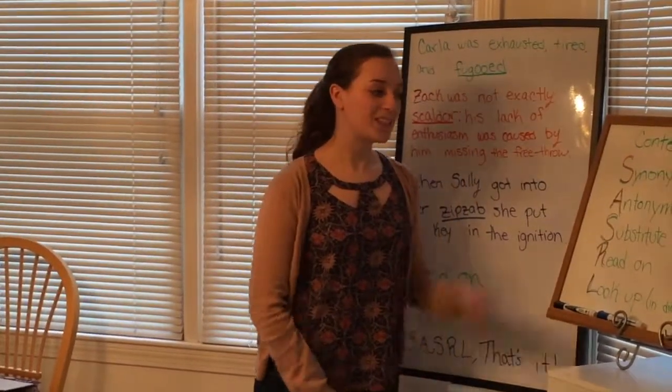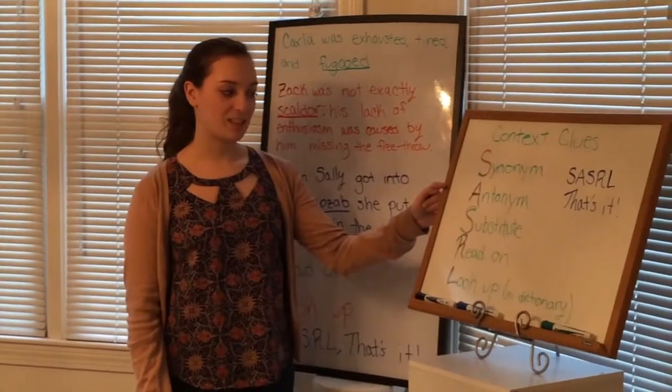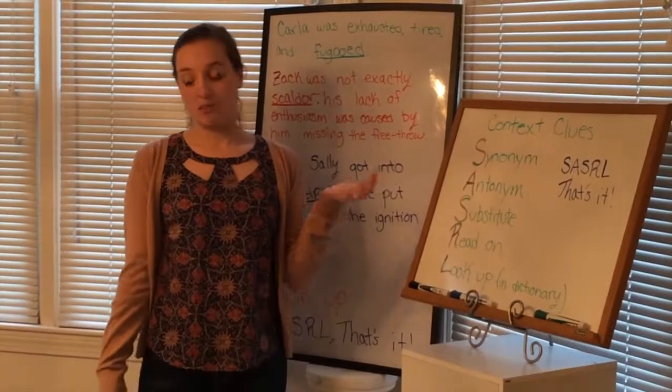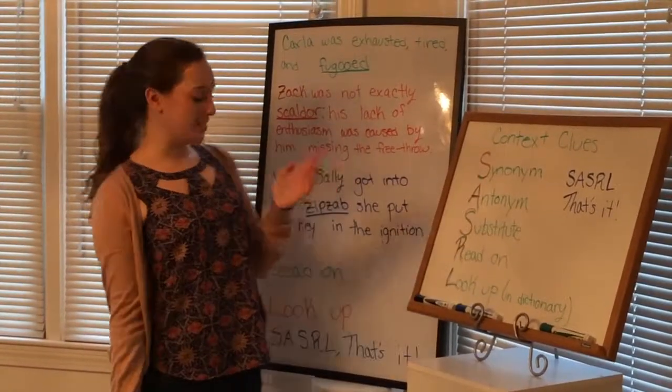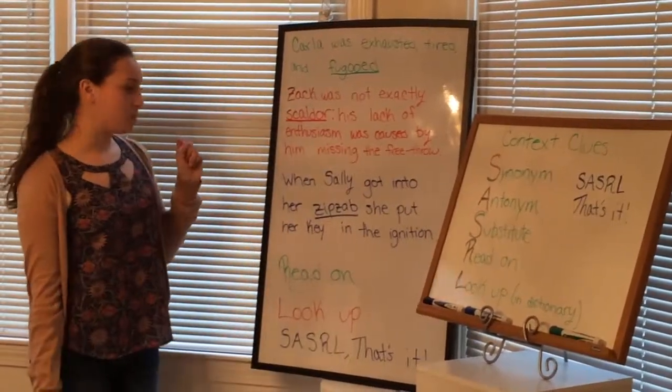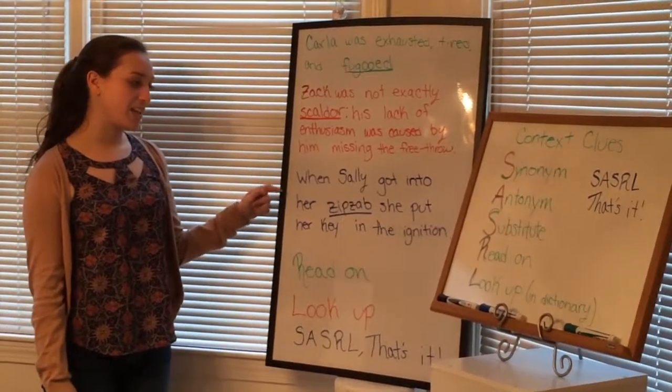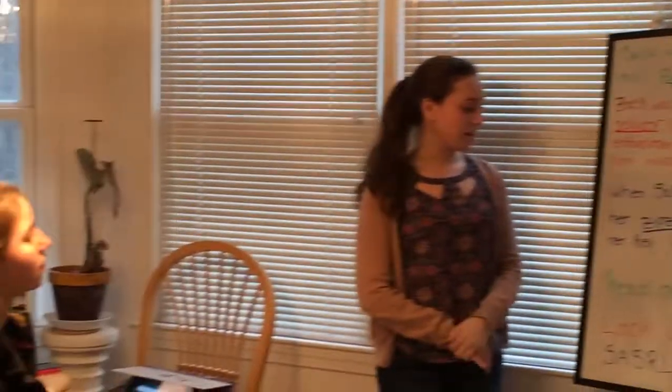And so if there's no synonym and no antonym in the sentence, you can substitute the word that you don't know with a word that you do know that might make sense in the sentence. So when Sally got into her zip-sab, she put her key in the ignition. Julie, how would you figure that out? Well, I know that she put her key in the ignition, so it must be like a boat or a car. Because you put your keys into the ignition in boats and cars? Yeah. That's right. Exactly.